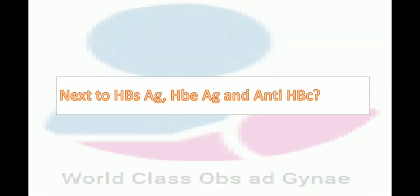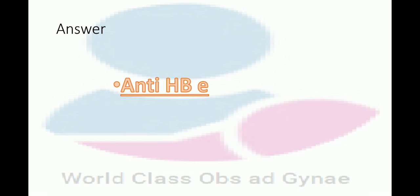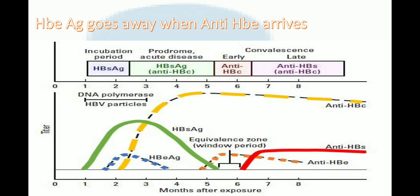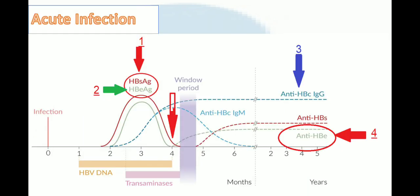Next after HBs antigen and HBe antigen, anti-HBc immunoglobulin appears, and after that, anti-HBe. Anti-HBe is produced after HBe antigen falls to its baseline. You can see from the graph that the HBe antigen level is falling and as a result anti-HBe is being produced. So you have to remember: when HBe antigen goes away, anti-HBe arrives. In acute infection the order is: number one HBs antigen, number two HBe antigen, number three anti-HBc immunoglobulin, number four anti-HBe.